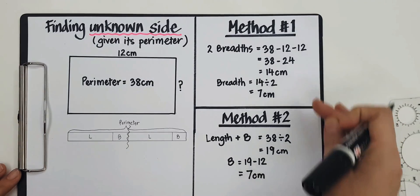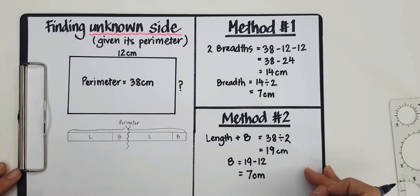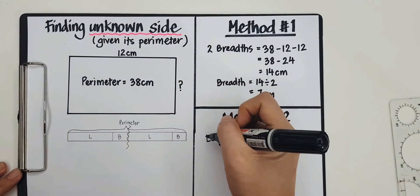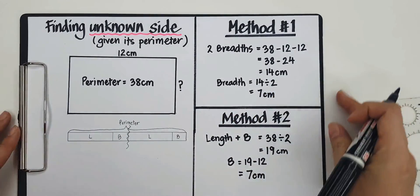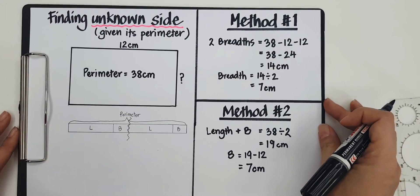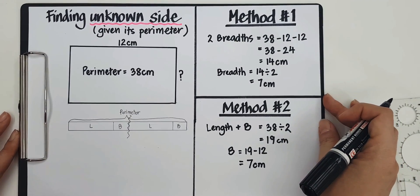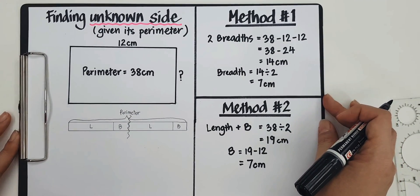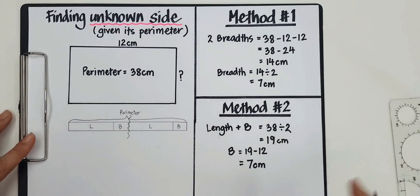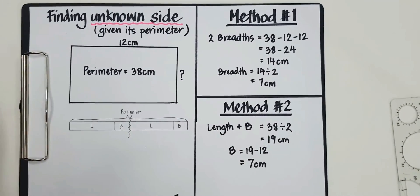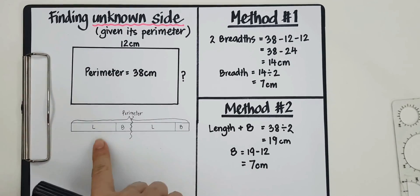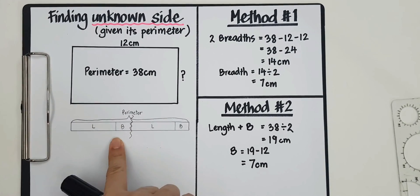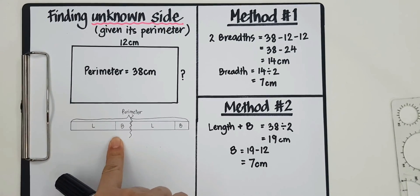If I take away the length that I know, I will be left with the breadth. This is proper working. I hope you can understand the working. If you don't, you can always replay the video and try to understand it. If you do not have any physical stuff to look at, you can always draw the model to help you.